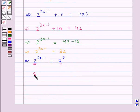We get 3x minus 1 is equal to 5. This means that 3x is equal to 5 plus 1, that is 3x is equal to 6.